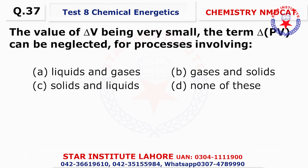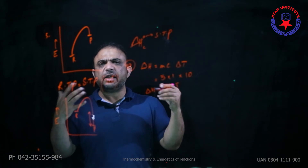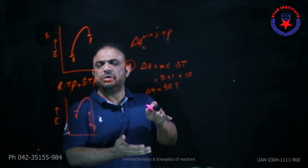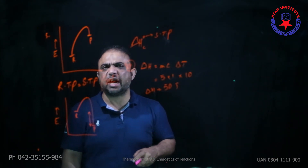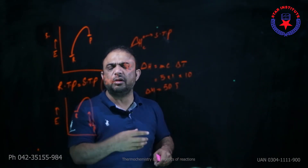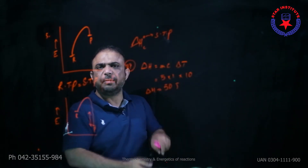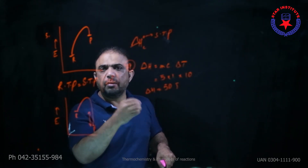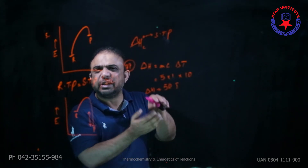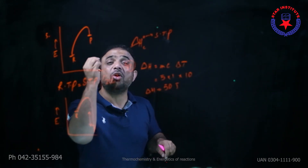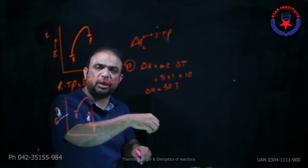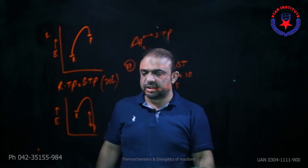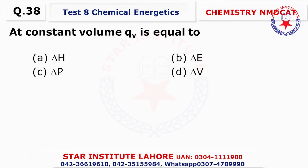Question number thirty-seven: The value of delta V is very small — for which state of matter? Gases have indefinite shape and volume, so their volume can change. Liquids have definite volume but indefinite shape, so no considerable volume change. Solids have both definite volume and shape. So delta V is smallest for liquids and solids. Choice C.